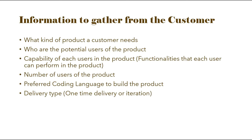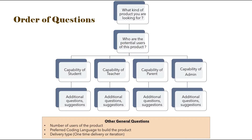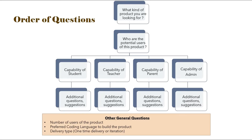To get all this information, a business analyst should ask a set of questions to the customer. Let us see what those questions are and also the order of the questions. The first best question is: what kind of product are you looking for? The next question is: who are the potential users of this product? Once you get the list of users, you pick up each user and try to get information about the functionalities or capabilities of that user.